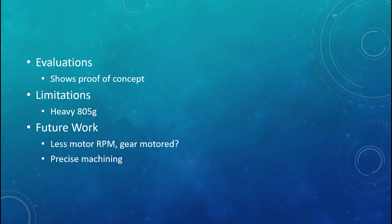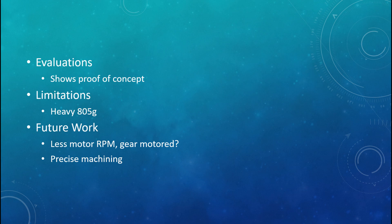One thing I noticed is that when the flywheel began to reach its maximum speed, the precession began to decrease. This is because, as we remember from the equation, disk speed is inversely proportional to precession. A possible solution would be to use a geared motor with a high torque output.